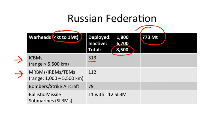Similarly, Russia does have a large bomber fleet, but again, not all of these bombers will be in the nuclear strike role. The Russian Federation also has 11 ballistic missile submarines, which deploy 112 submarine-launched ballistic missiles between them.